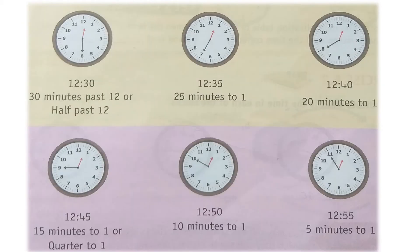In the next picture, the minute hand is at six, showing 30 minutes — because 6 multiplied by 5 is 30. So you write the time as 12:30, or 30 minutes past 12, or half past 12.